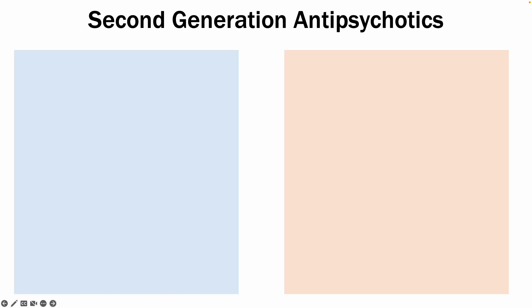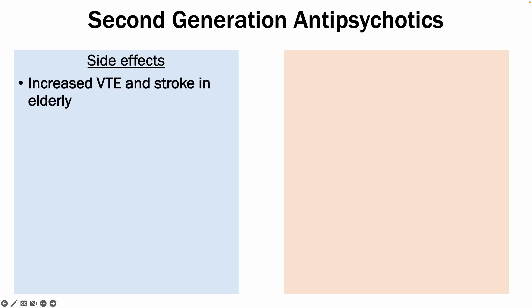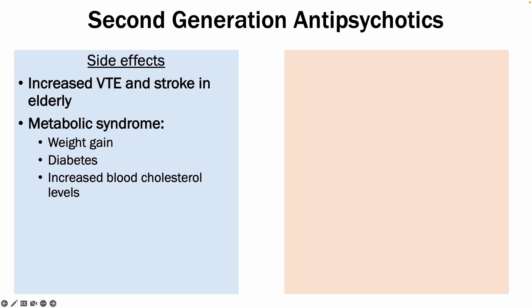In terms of side effects, they can increase the risk of venous thromboembolism and stroke in the elderly. Very importantly, second-generation antipsychotics can cause metabolic syndrome, which includes weight gain, diabetes, and increased blood cholesterol levels.